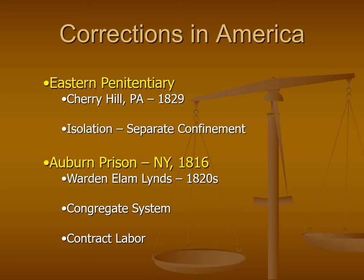The notion of the congregate system had people working together during the day, but then at night they would return to their own cells. Within Auburn, because you had this congregate system of work during the day, it allowed them to turn the inmates into laborers. This introduced the idea of the contract labor system, where inmates' labor was used to create goods and manufacture things that could then be sold to the public or to private industries.